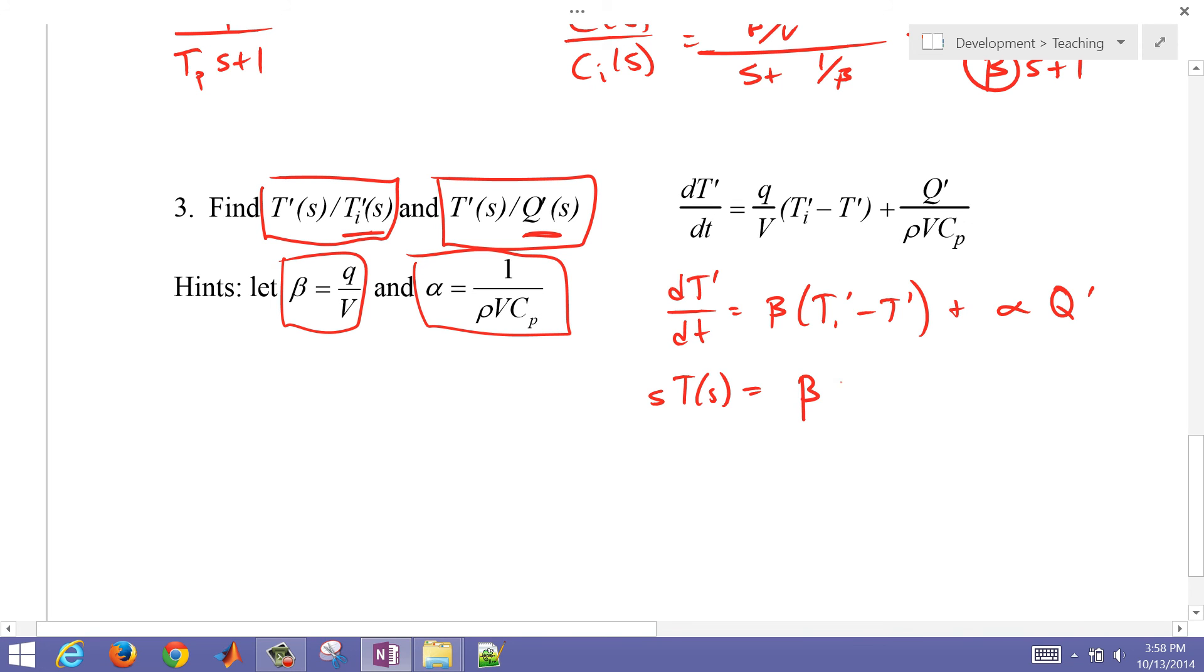And I'll put this into the Laplace form. Again, zero initial conditions for deviation variables, so I can drop that one, equals beta times Ti of S minus beta times T of S, plus alpha times Q of S.